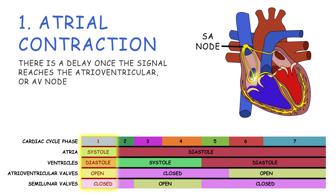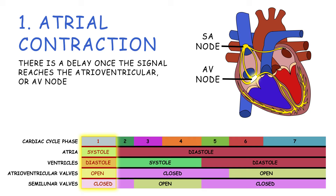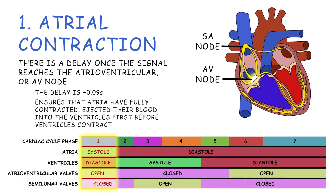Note that there is a delay once the signal reaches the atrioventricular, or AV, node. The delay is only approximately 0.09 seconds, but it is extremely important. It ensures that the atria have fully contracted, ejecting their blood into the ventricles before the ventricles contract.